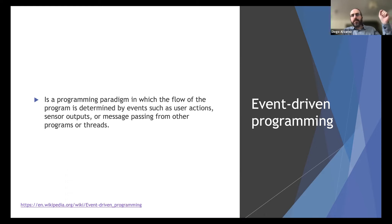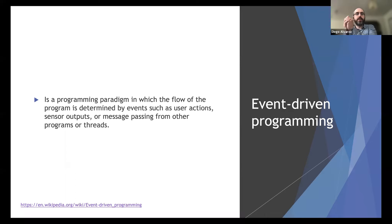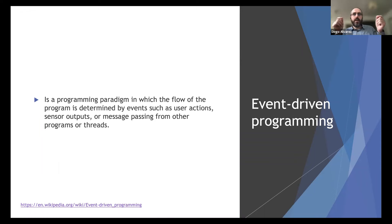This is very different to what normal research software does, which tends to be linear. You start the software, it calls a function, calls another, creates some objects, there might be loops and multiple parallel processes that eventually collapse to one single process, then some manipulation and output. It's linear — it has a beginning and an end. In event-driven programming, there is no beginning and no end in the middle.